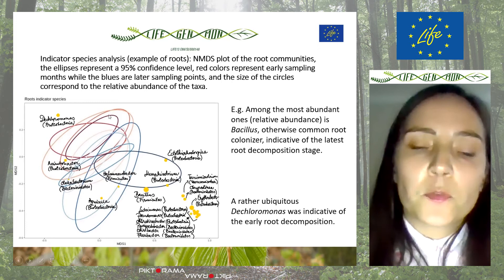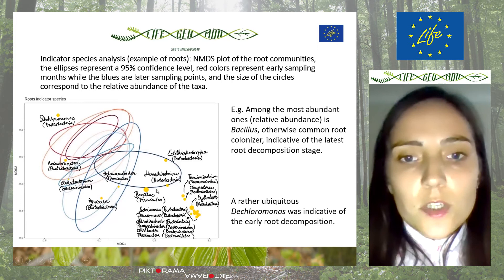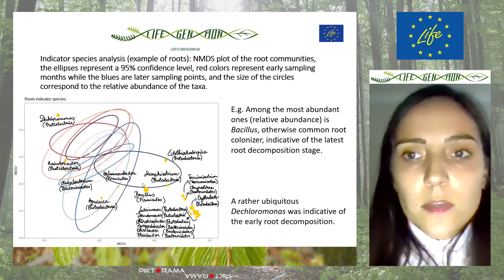The blue colors represent the later stages. The size of the dots corresponds to the relative abundance of the taxa. We can see that many taxa are indicative of the later stages of root decomposition — for example, Bacillus, among the most abundant ones and a common root colonizer, was indicative of the latest month.